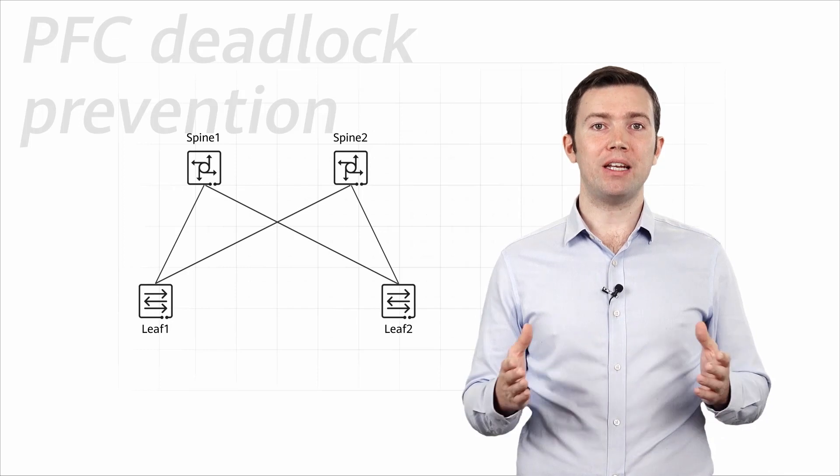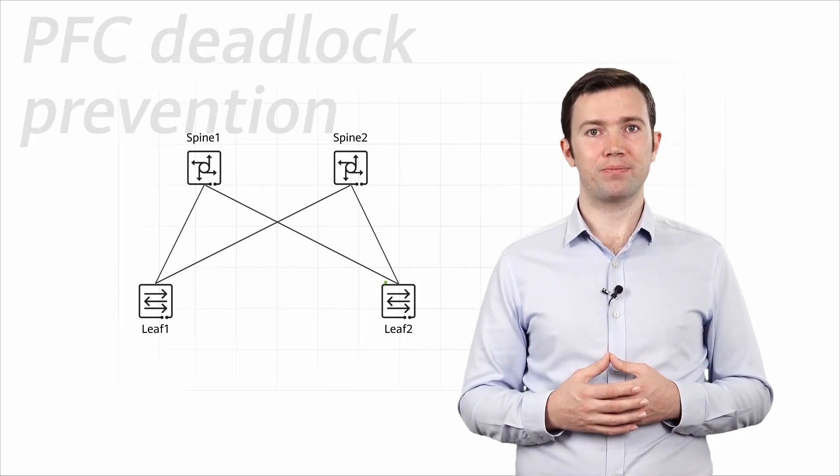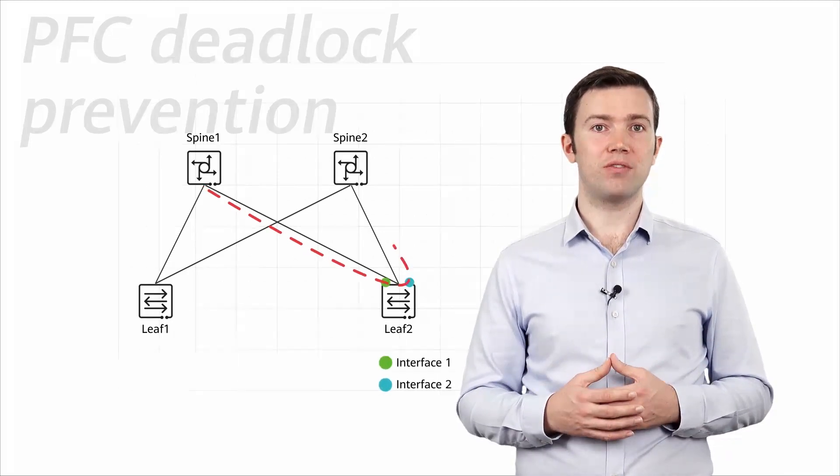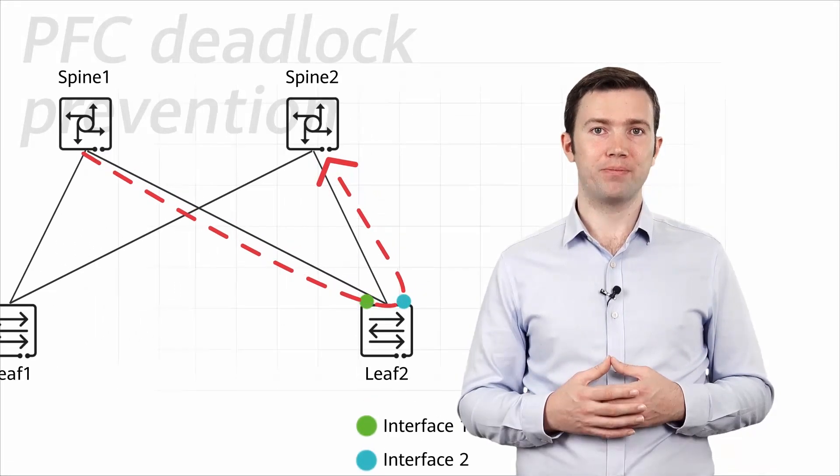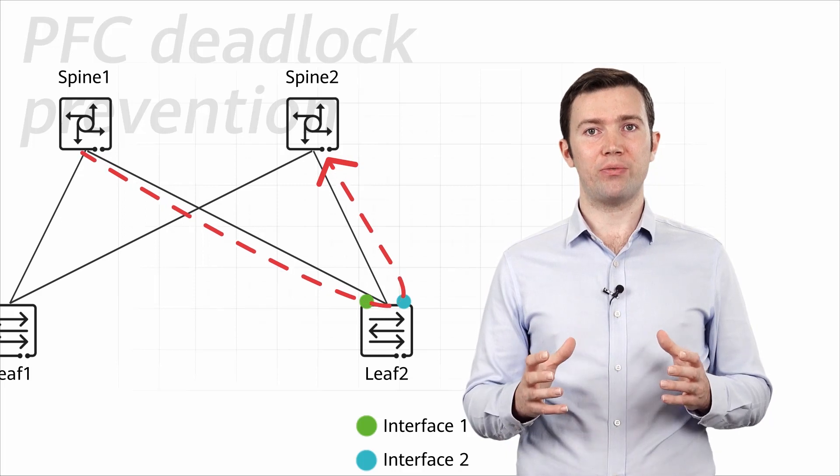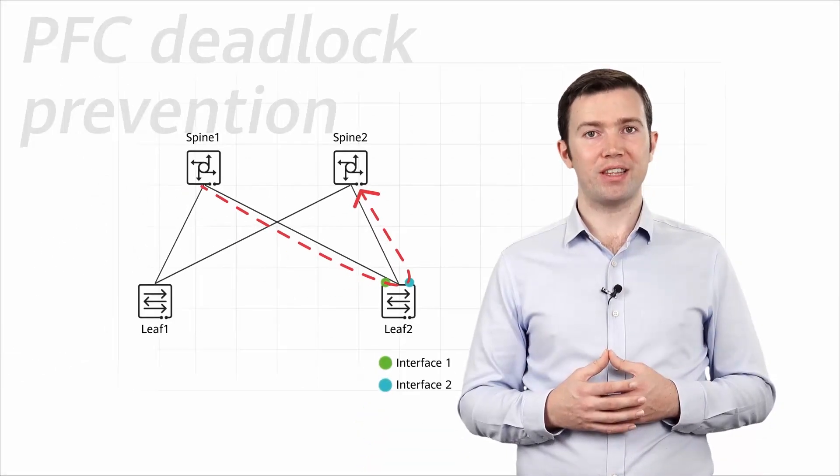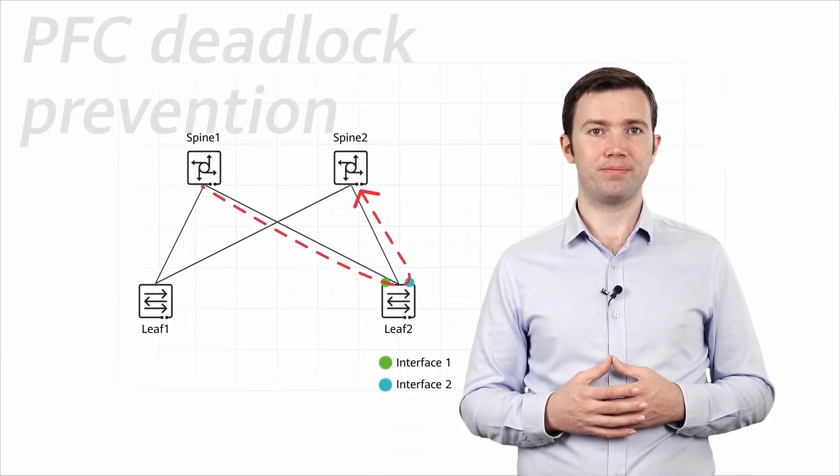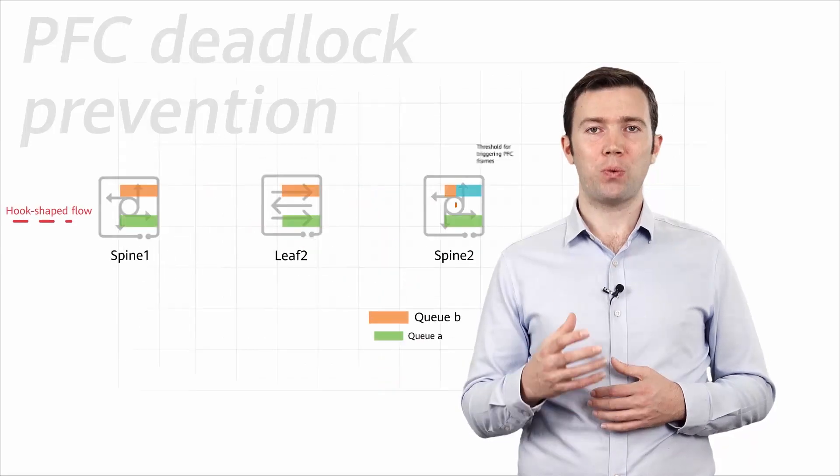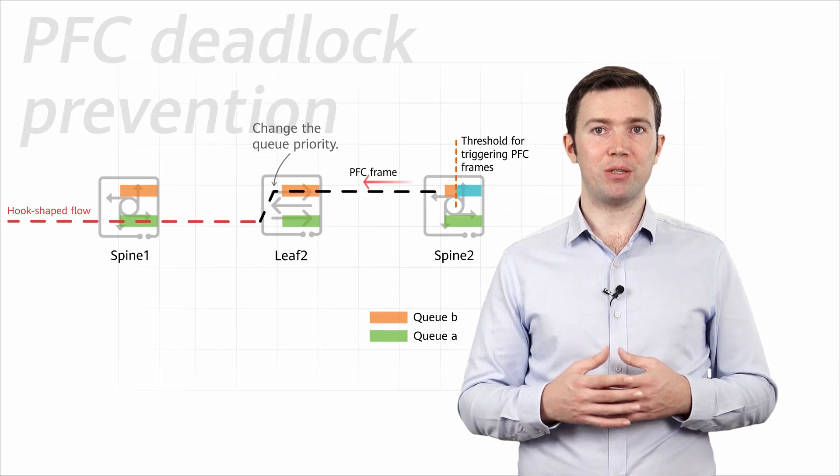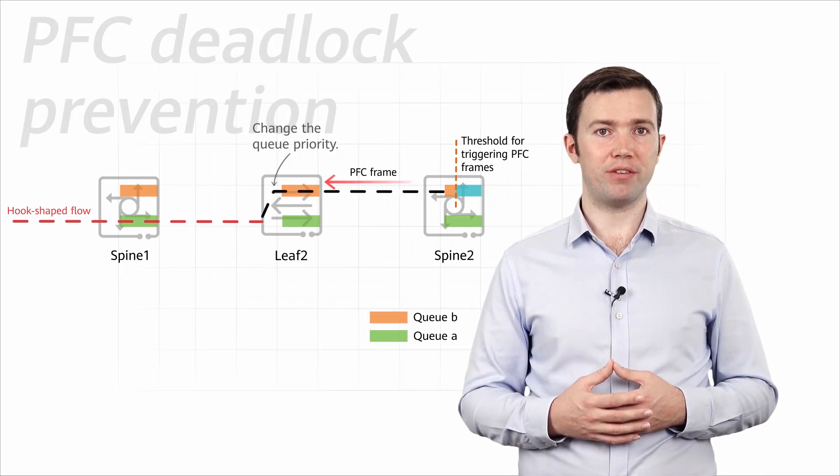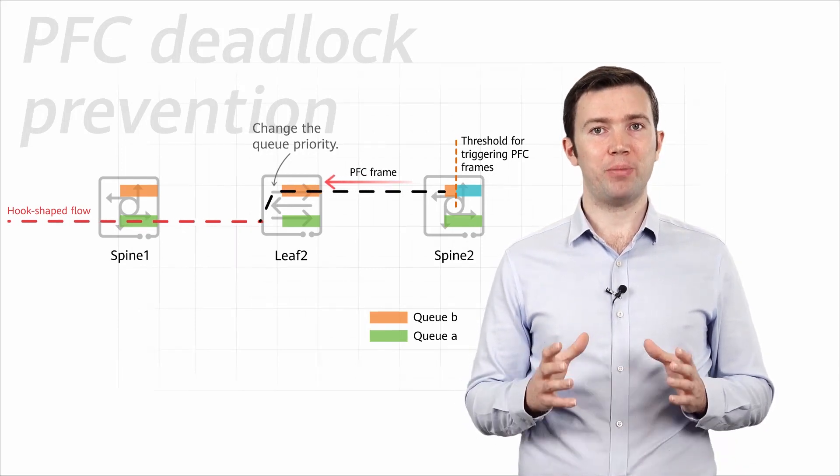In the typical spine-leaf networking of datacenter networks, if a leaf node detects that a service flow comes in and out through interfaces connected to spine nodes, the service flow is considered a high-risk, hook-shaped flow that may cause a PFC deadlock. In this case, Huawei switches will switch the service flow to another queue to change the PFC path to prevent loops caused by PFC frames, thereby avoiding a PFC deadlock.